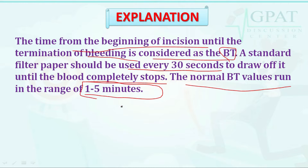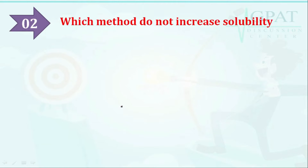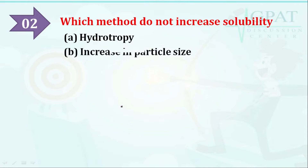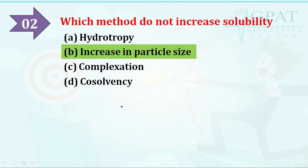The next question: which method does not increase solubility? Options are: option A: hydrotrophy, option B: increase in particle size, option C: complexation, option D: co-solvency. The correct answer is increase in particle size, which does not increase solubility.